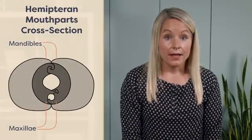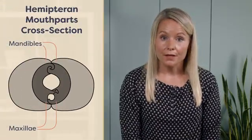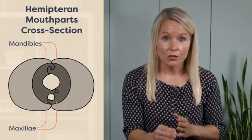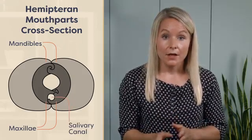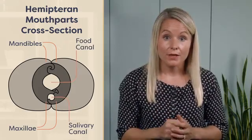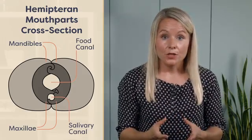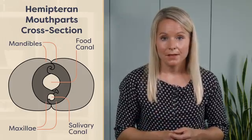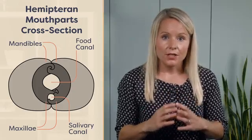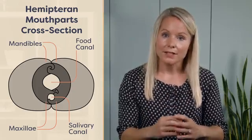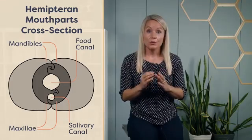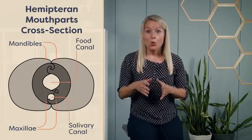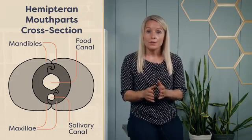Many sap feeders inject salivary secretions into the plant to help them feed. Prominent muscles in the pharynx pump saliva into the plant tissue through one channel in the stylets, while the contents are sucked out through another channel. These secretions break down plant compounds, which can then be ingested by the insect. They also form a solidified sheath which surrounds the stylets in the plant tissue. The sheath may serve to reduce fluid loss around the stylets, protect the stylets from damage, or guide the stylets while the insect probes the plant tissue.